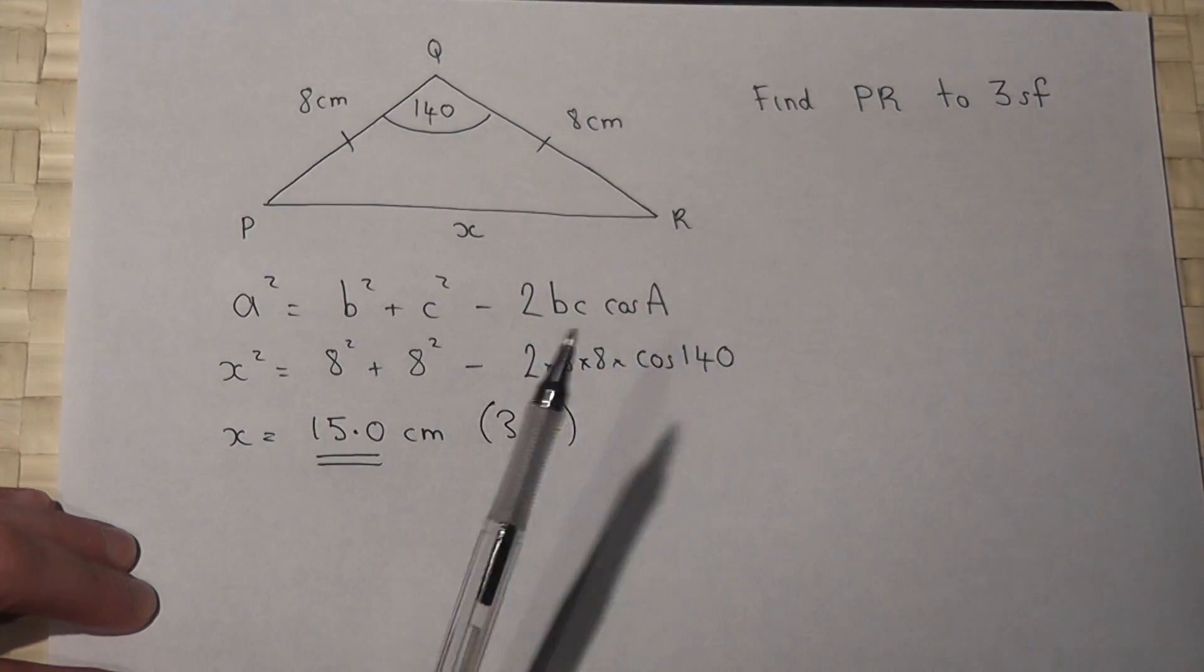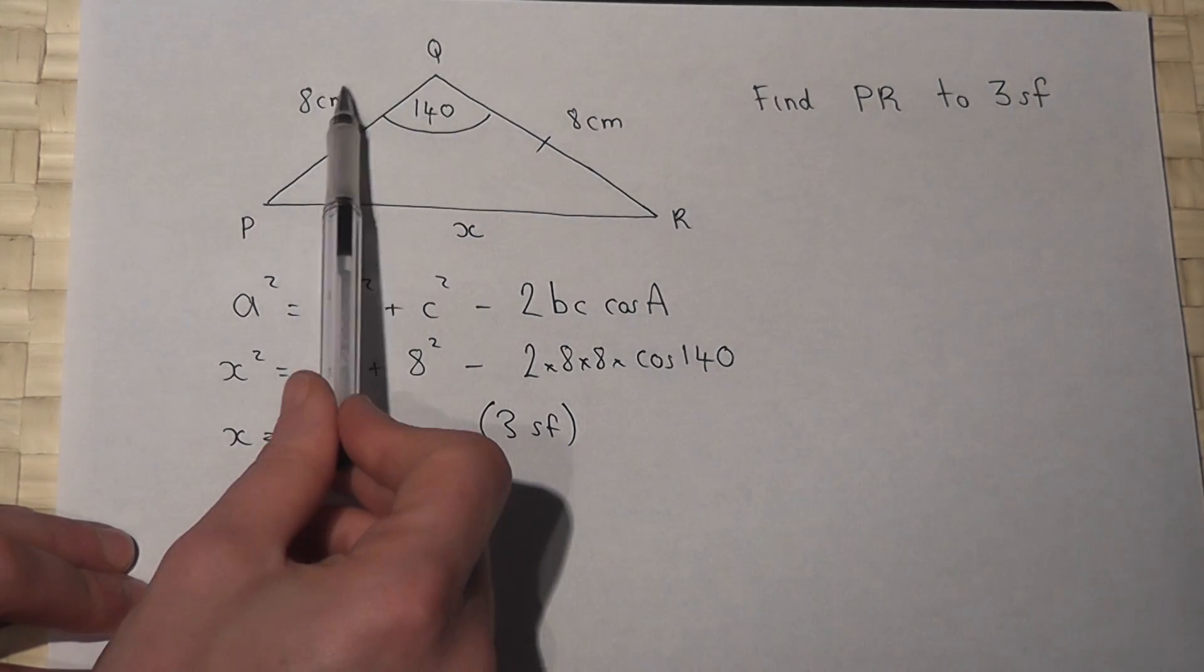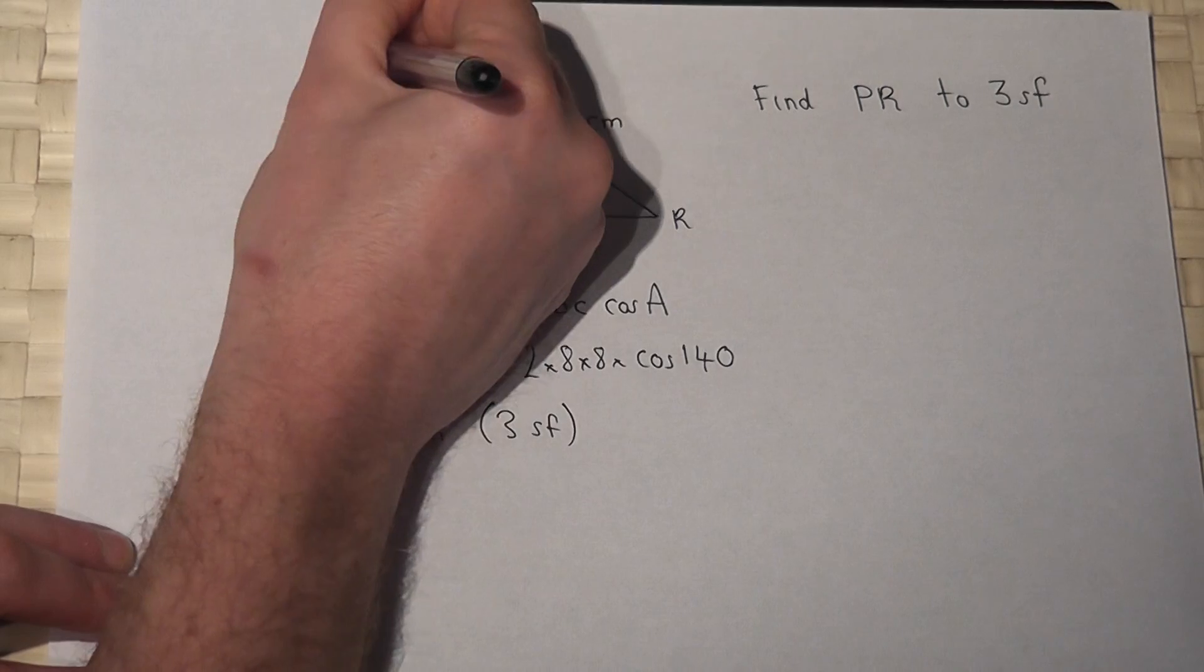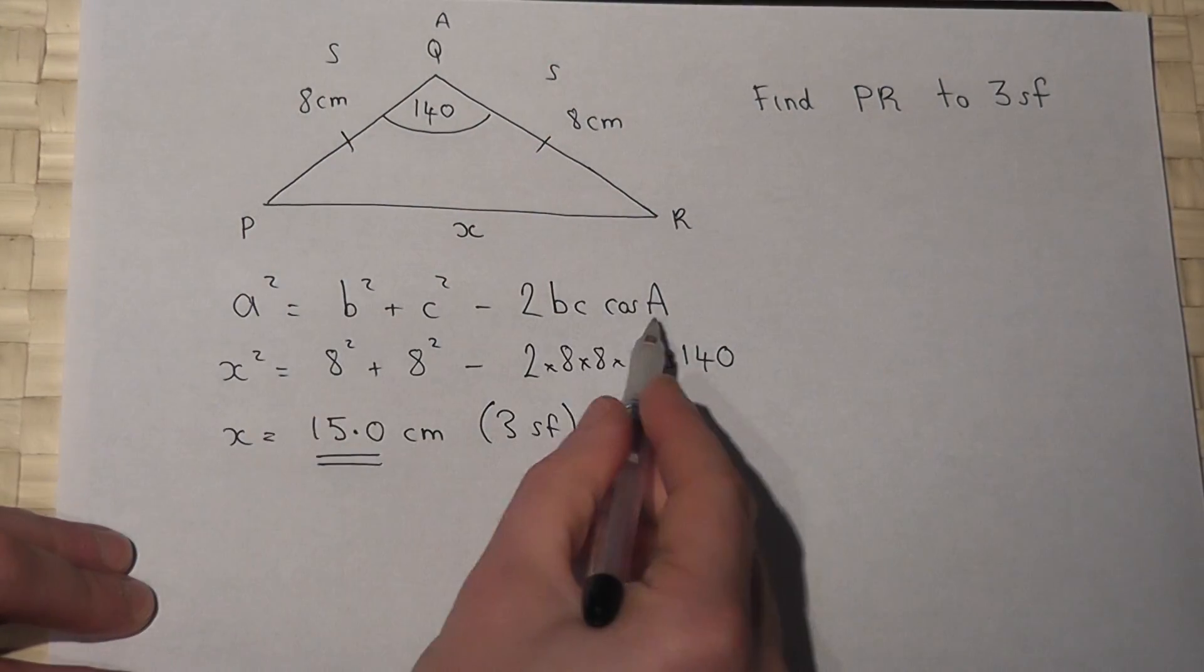So a summary, if you want to find a side opposite an angle, if you know the other two sides, I call it the s, a, s rule, then we use the cosine rule.